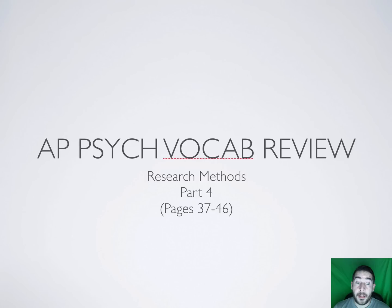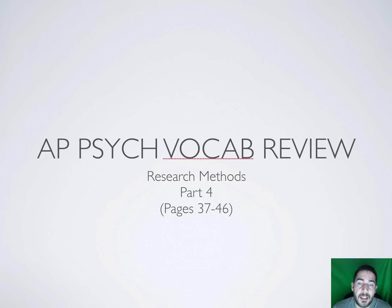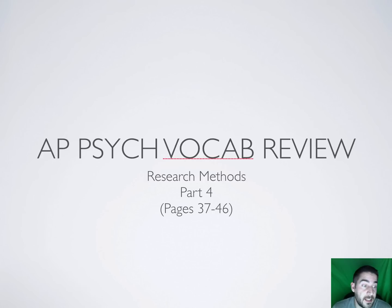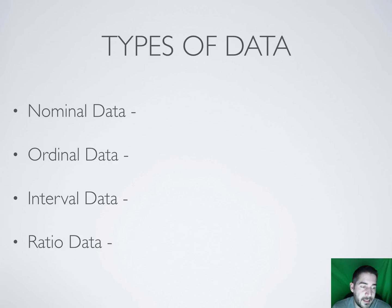This is the last vocab review for research methods — part 4. It covers pages 37 through 46 in the Myers AP Psychology textbook. We're talking basically about statistics here, just some very basic statistics.